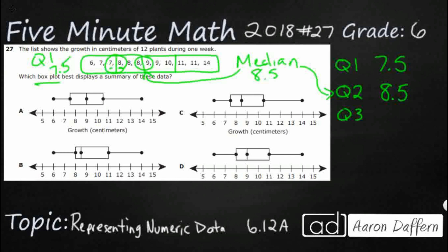We do the same thing on the right side for Q3. It falls between 10 and 11, so we're going to call that 10.5. The final thing to know is that our two extremes are represented by the first and the last number. The first number is 6 — that's our minimum extreme — and our last number is 14 — that's our maximum extreme.